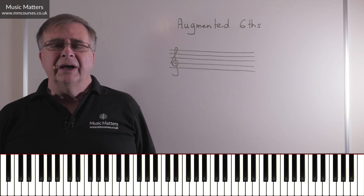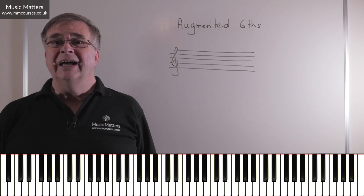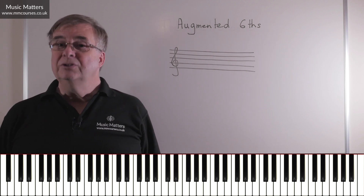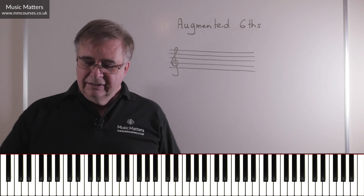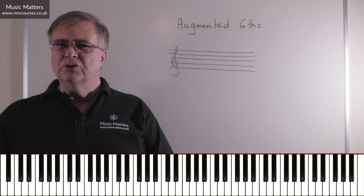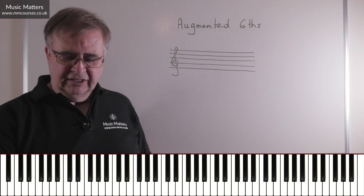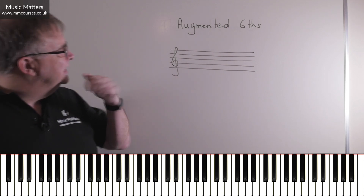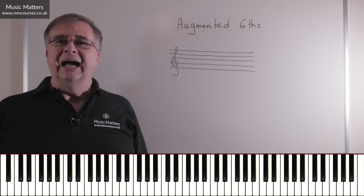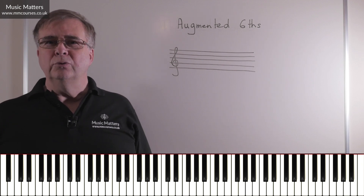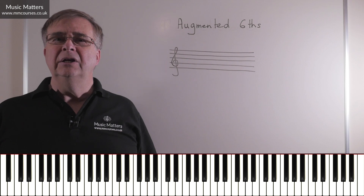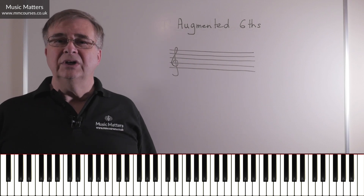Lots of people vaguely know about augmented sixths but get a bit confused as to how to construct them. So I'm going to spend a few moments talking about that now. I'll give you the recipe, which may seem a bit strange at first but hopefully it will make sense as we go. Let's assume we're in the key of C major. Here is step one of the recipe: we're going to start by finding the lowered sixth degree of the scale.